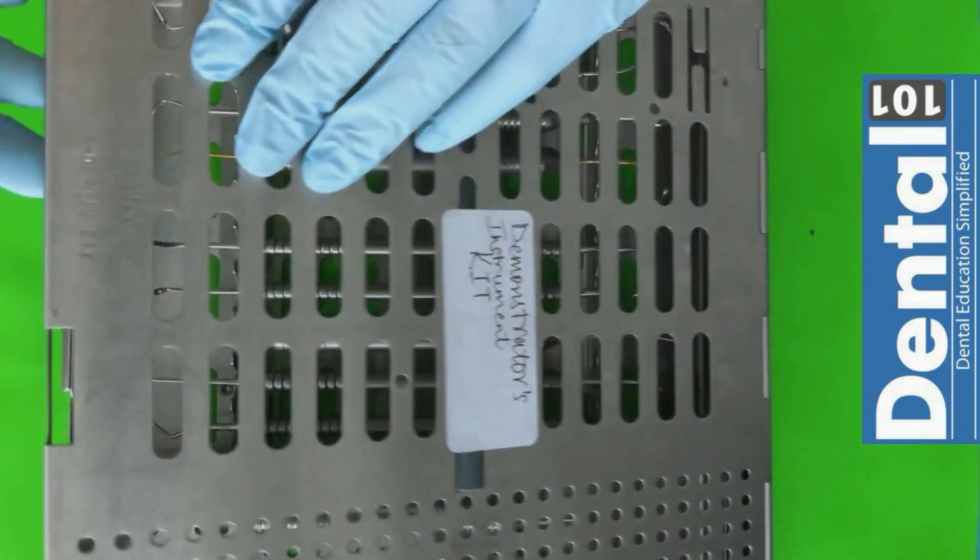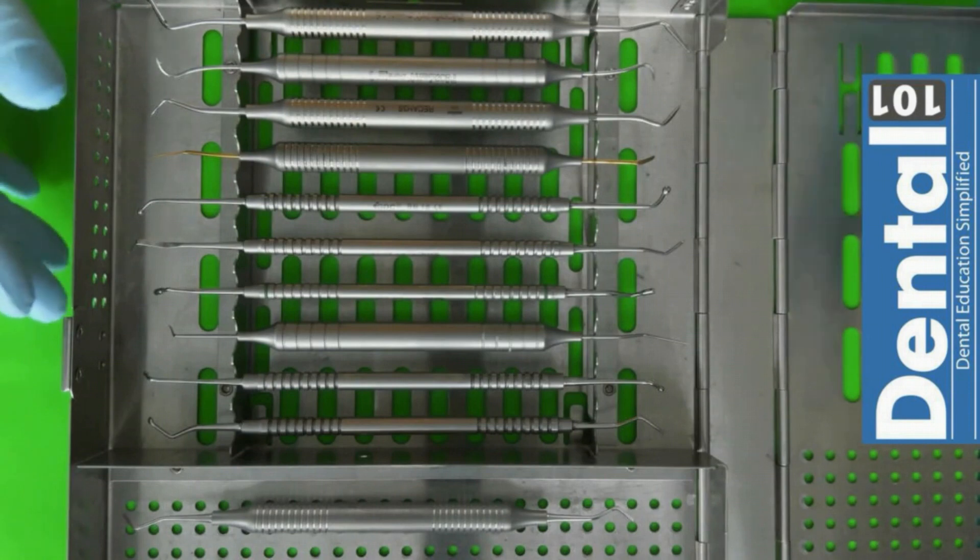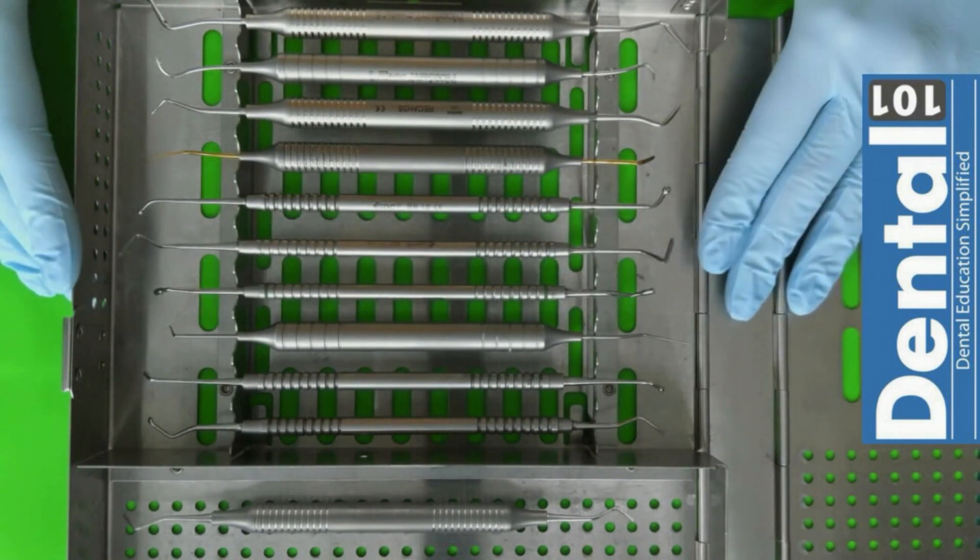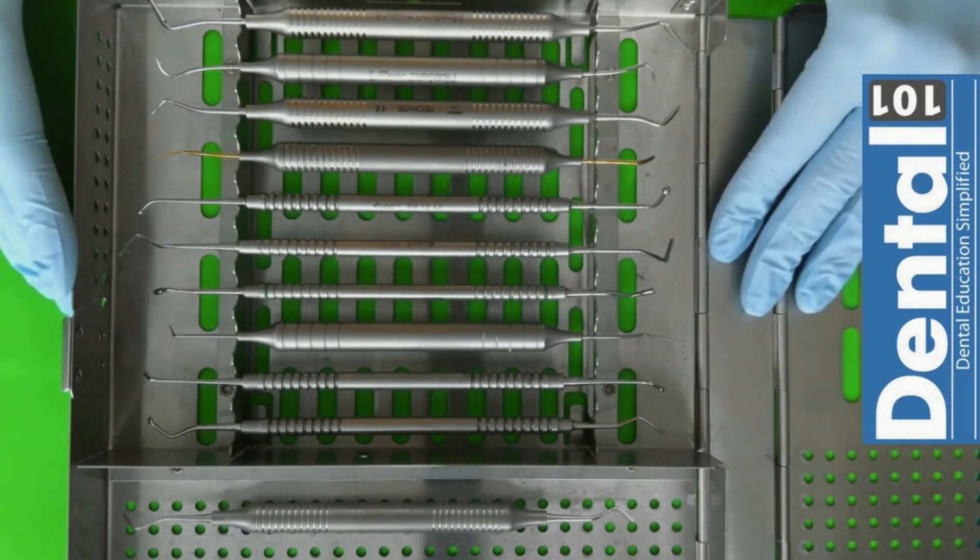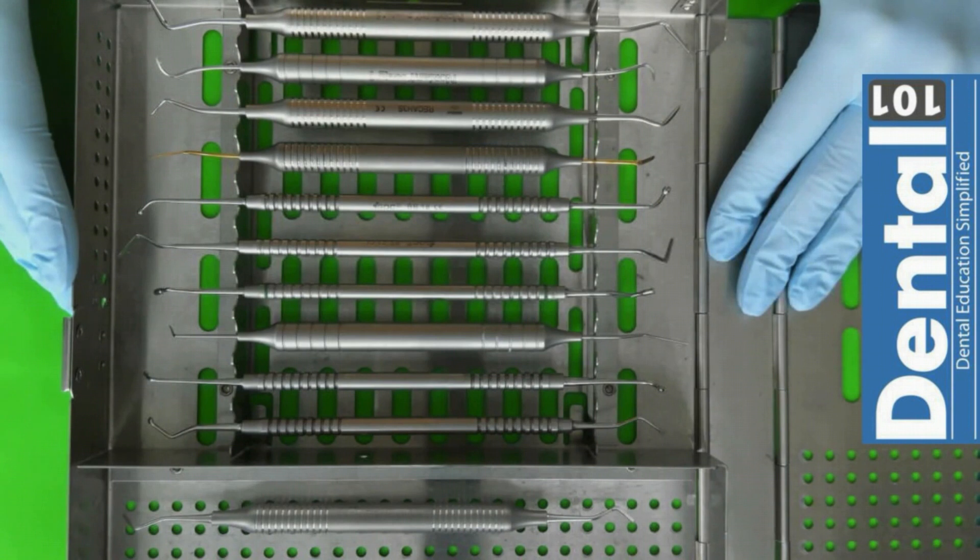If we open the cassette, remember that this cassette should always be closed. When we are going to use the instruments we are going to open the cassette and here you will see all the instruments that you are going to be provided during the exam. We are going to take a look into each instrument to revise the form, the shape, and the uses for this instrument so we can tackle all our tasks in a better manner.